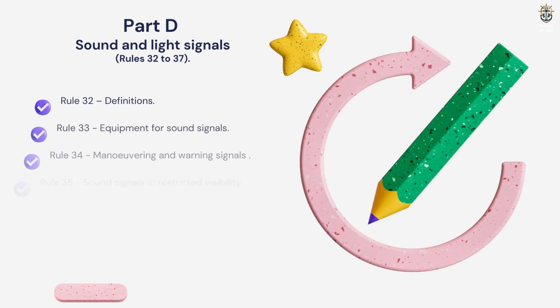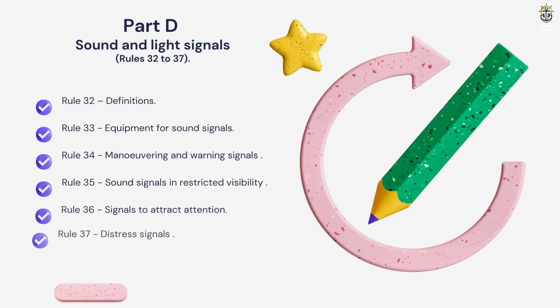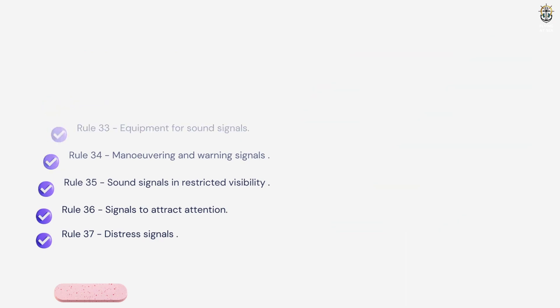Part D, Sound and Light Signals. It covers from Rules 32 to 37. Rule 32, Definitions. Rule 33, Equipment for Sound Signals. Rule 34, Maneuvering and Warning Signals. Rule 35, Sound Signals in Restricted Visibility. Rule 36, Signals to Attract Attention. Rule 37, Distress Signals.